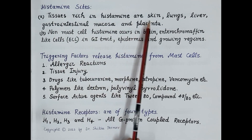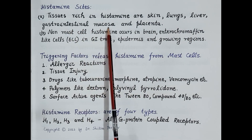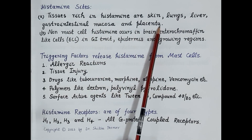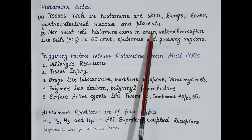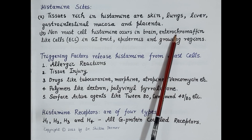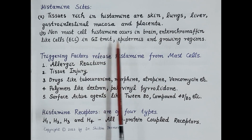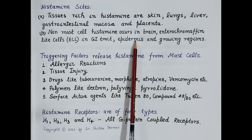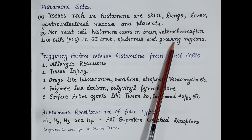Tissues rich in mast cell histamine are the skin, lungs, liver, gastrointestinal mucosa, and placenta. Non-mast cell histamine occurs in the brain, in the enterochromaffin-like cells of the gastrointestinal tract, in the epidermis, and in growing and regenerating tissues, as histamine is required for growth and repair of tissues.